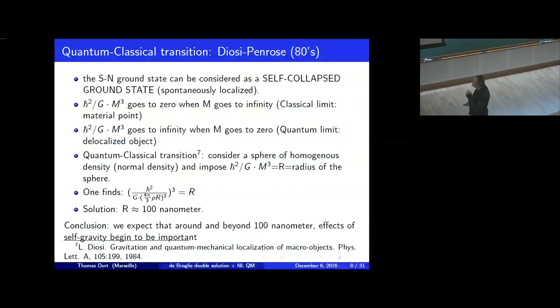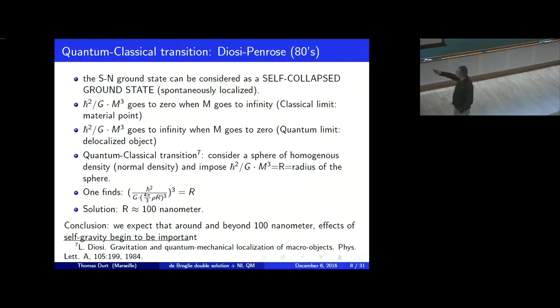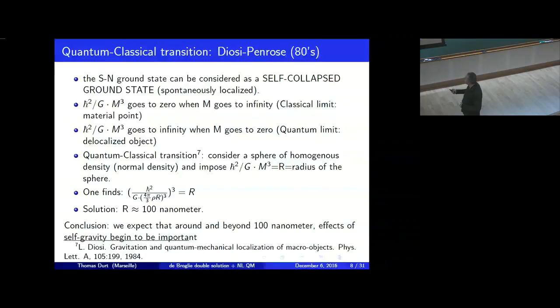You can see this very easily by considering a sphere of homogeneous density where you vary the radius. The mesoscopic transition corresponds to the situation where the Lieb radius equals the radius of the sphere. In that case, the nonlinearity begins to become significant. Because mass is related to density, and if you take normal density, you find in a straightforward calculation that the radius corresponding to this mesoscopic sphere is of the order of 100 nanometers. This fixes the position where one should pass from the quantum to the classical regime.